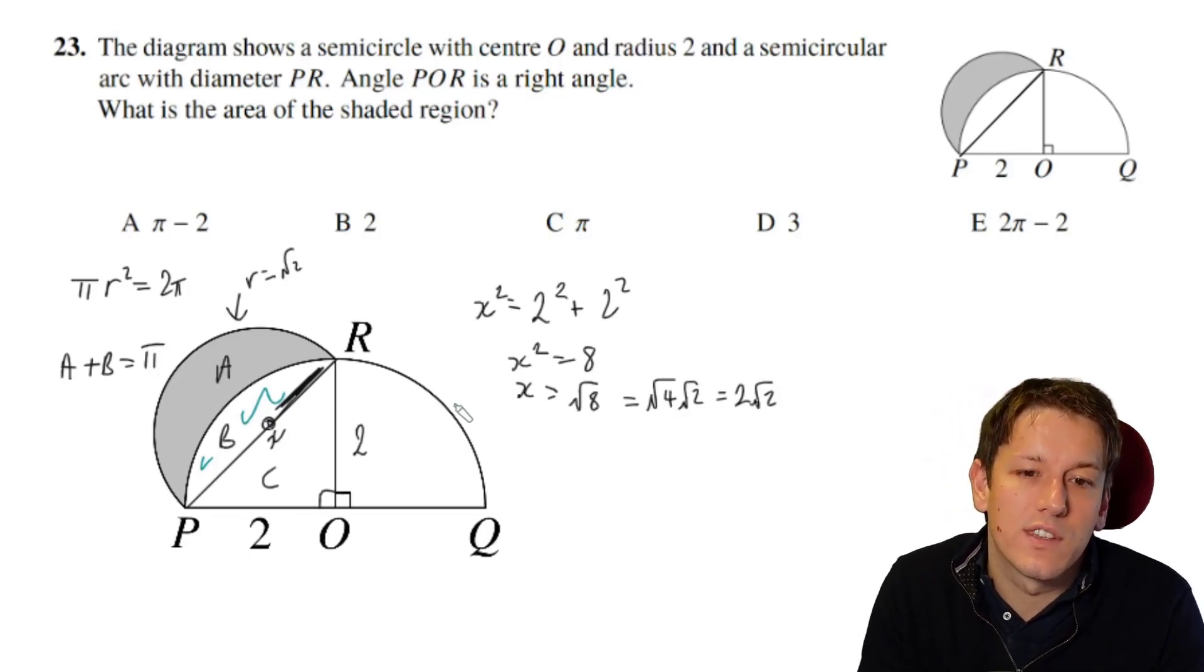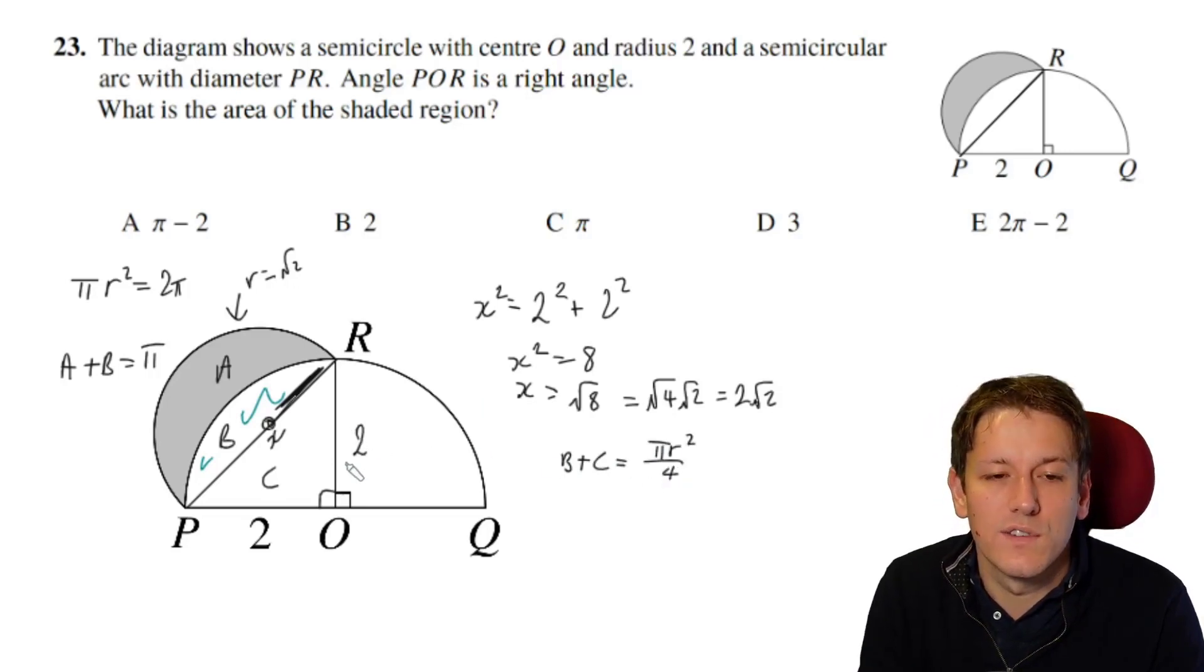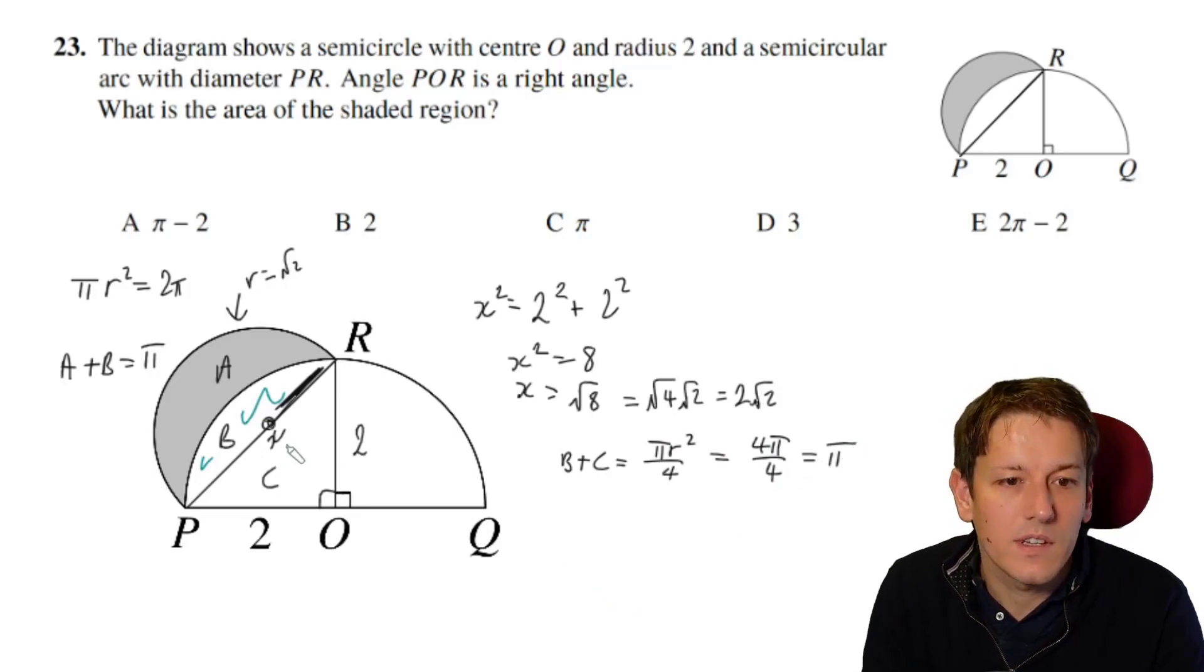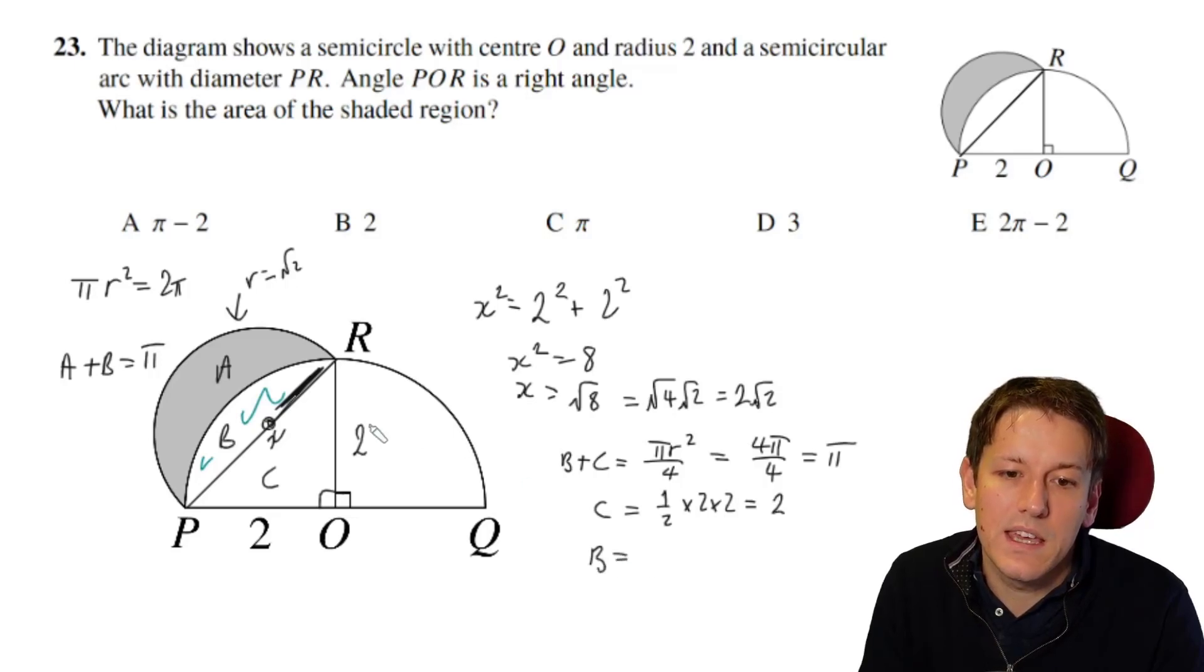So to get the area of b, I would just look at the original circle and say the quarter of the circle, b plus c here, is pi r squared over 4. It's a quarter of that circle where r this time is 2. So I've got pi times 4, or 4 pi over 4, which is pi. But the area of c is just a triangle, half base times height, so half times 2 times 2 is equal to 2. So actually, the area of b here is pi minus 2, the quarter of the circle minus the triangle.